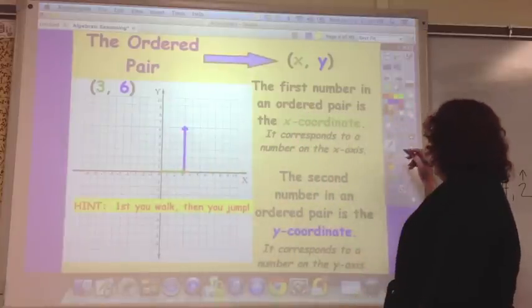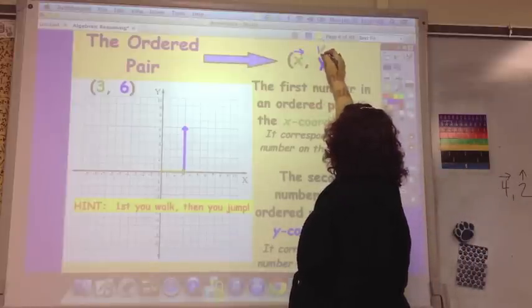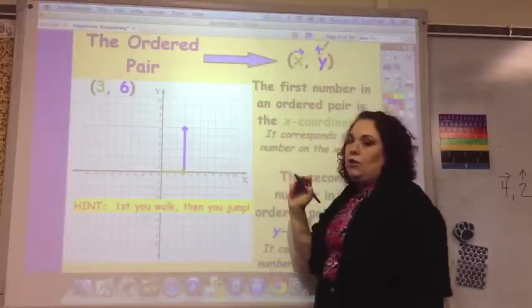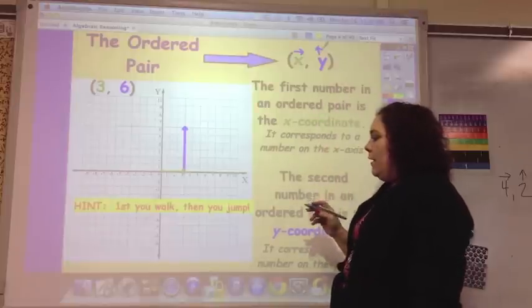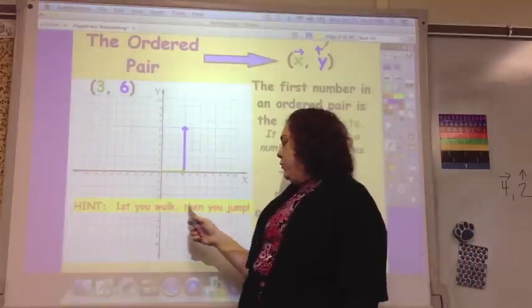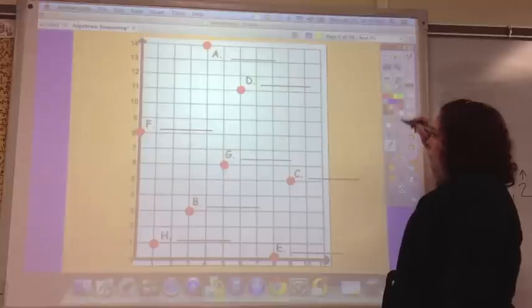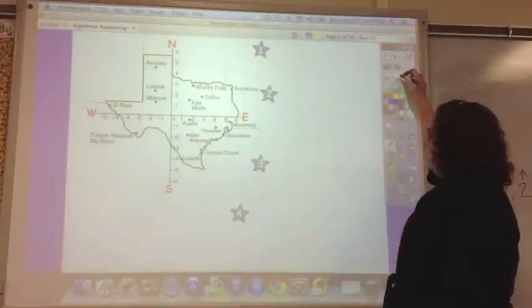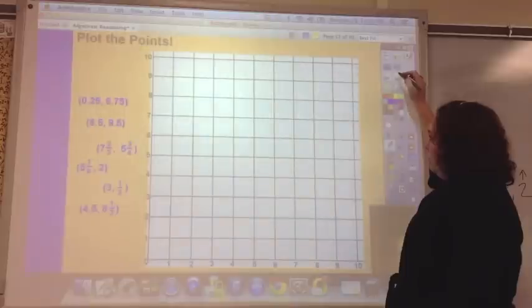As I mentioned, sometimes they go over and up, and just remember the arrows, which way they go. Another hint is first you walk, then you jump.